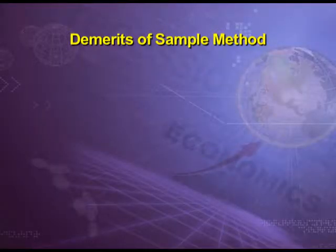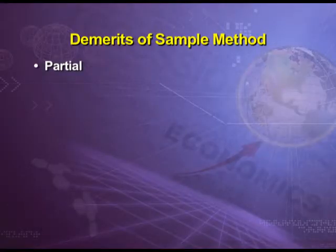Demerits of sample method: the first demerit is it can be partial, because the success of sample method is basically dependent upon selection of an appropriate sample. If sample selection is not proper, then results can be partial. The second demerit is wrong conclusions — if we have taken any sample which is not representative of the entire population, then our conclusions would be wrong.